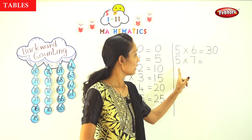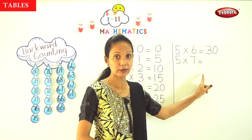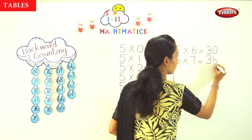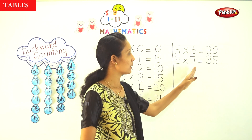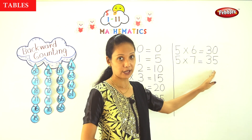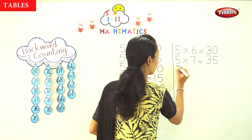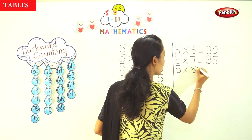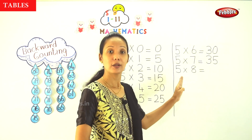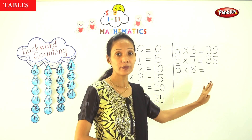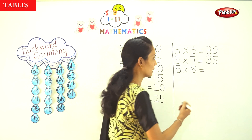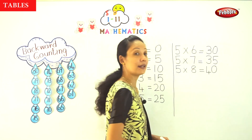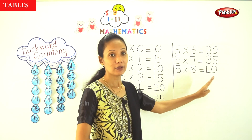Okay, 5 into 7. That is 5 into 7 is equal to 35. Now next, 5 into 8 is equal to 40.